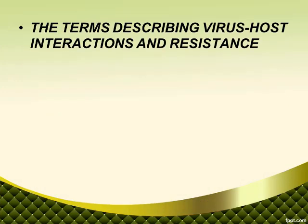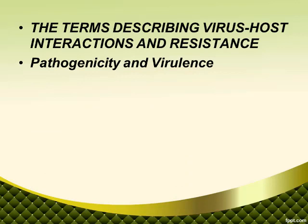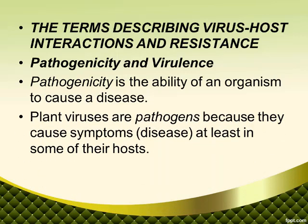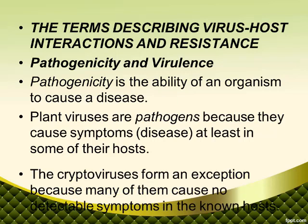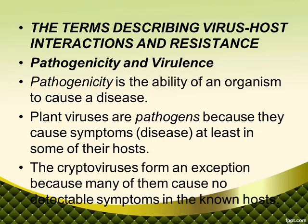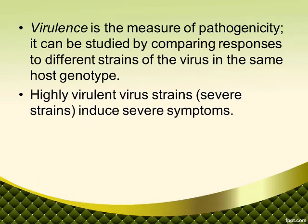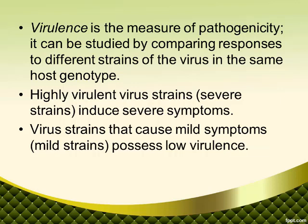Terms describing virus-host interaction and resistance: pathogenicity and virulence. Pathogenicity is the ability of an organism to cause a disease. Plant viruses are pathogens because they cause symptoms at least in some of their hosts. The cryptoviruses form an exception because many of them cause no detectable symptoms in the known host. Virulence is the measure of pathogenicity; it can be studied by comparing responses to different strains of the virus in the same host genotype.